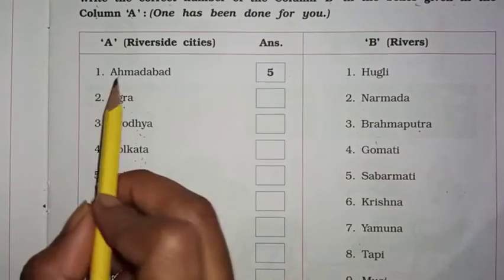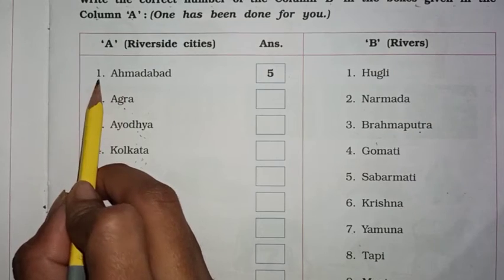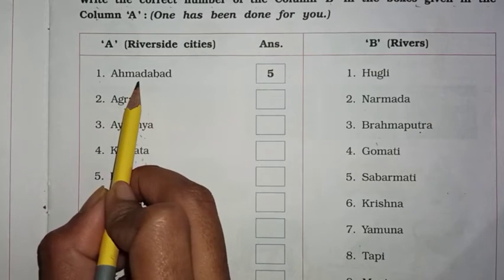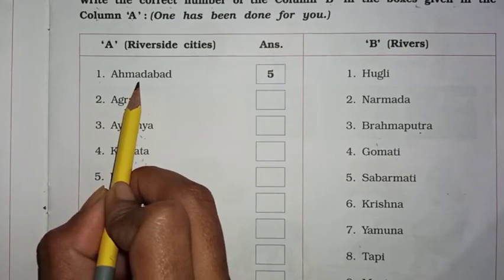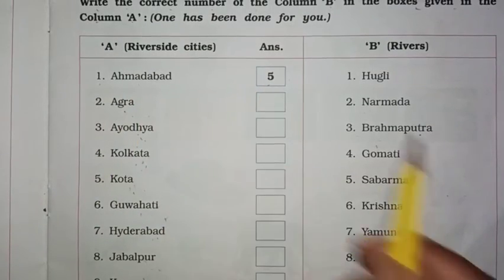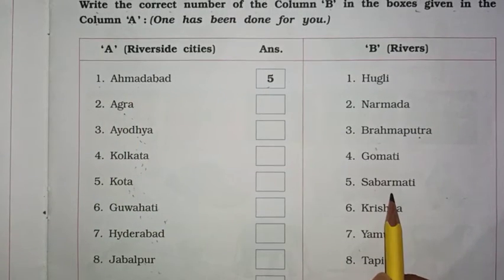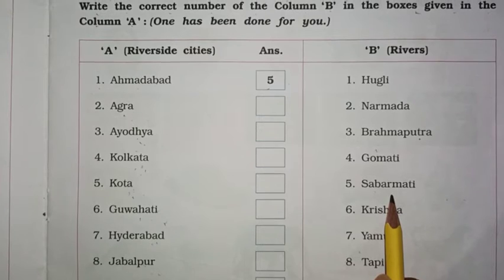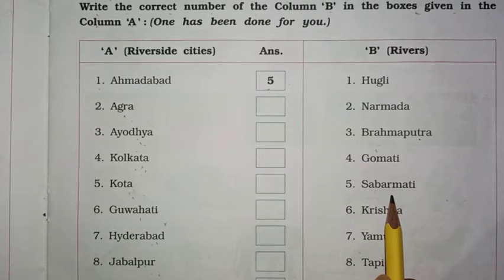चलो, start करते हैं। First देखो: Ahmedabad — उसका answer हमें दिया गया है: five. साबरमती — वो कौनसी river के पास आया हुआ है — साबरमती।